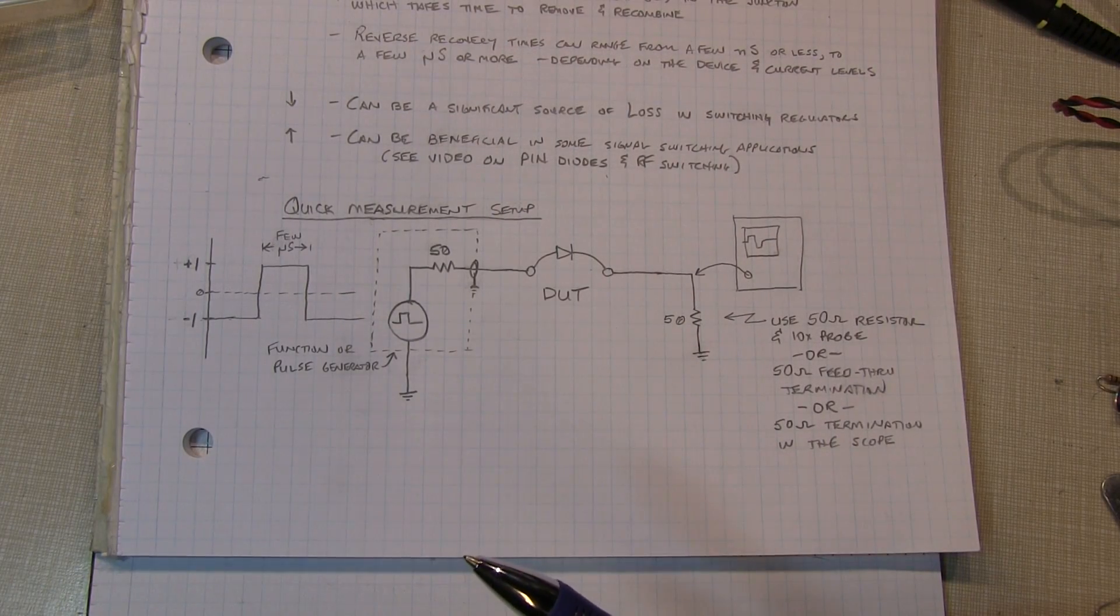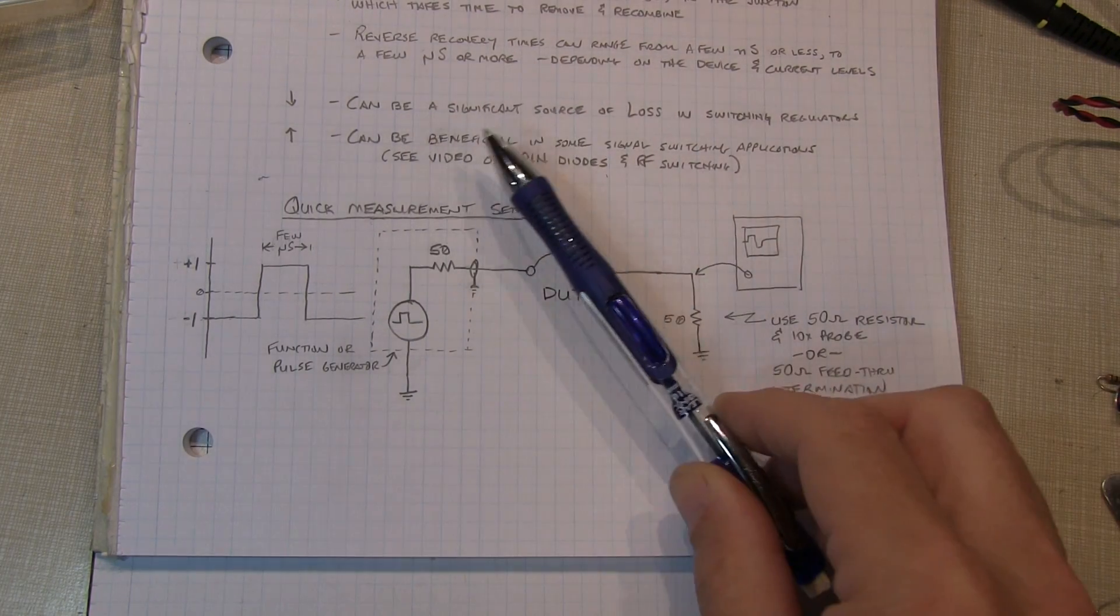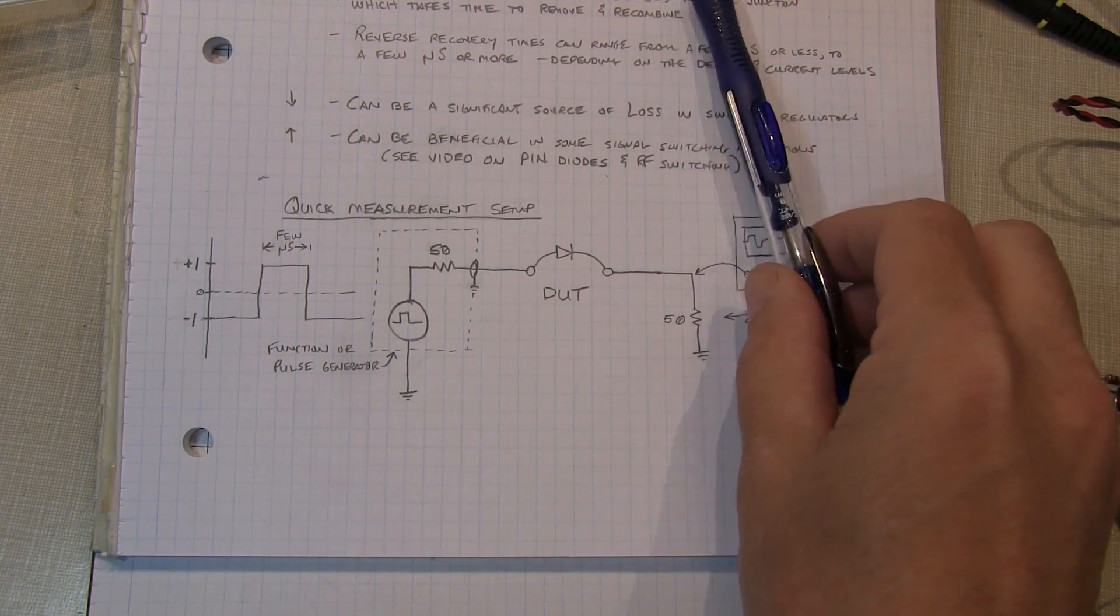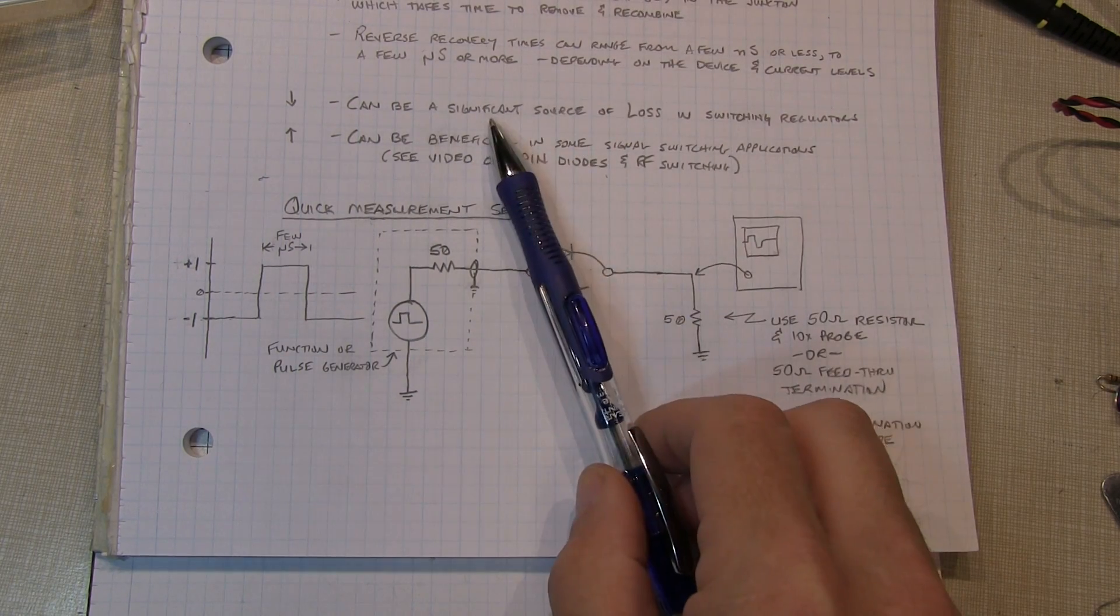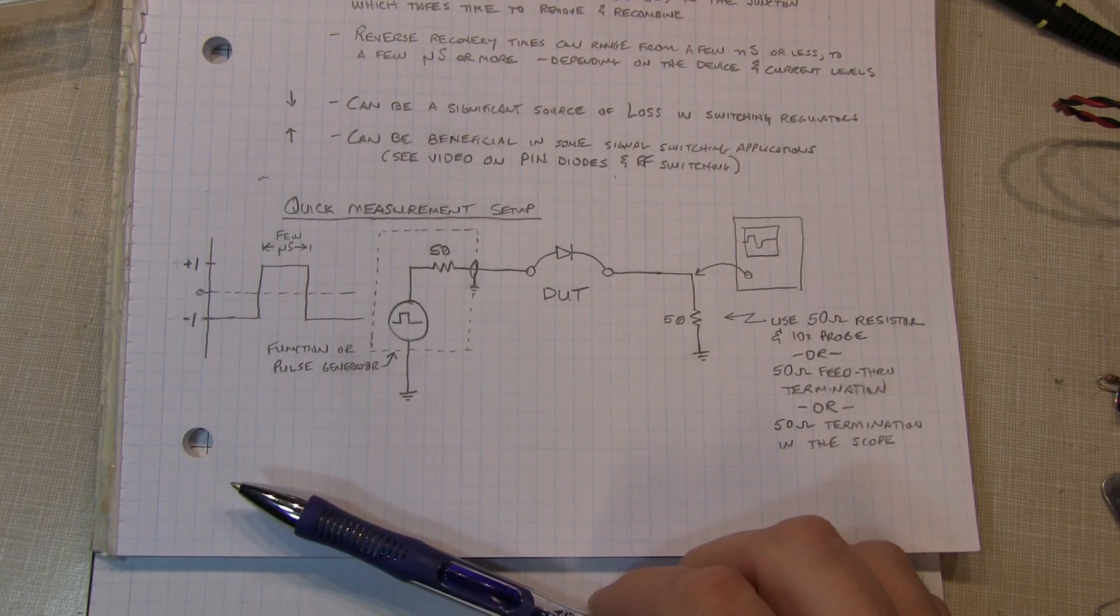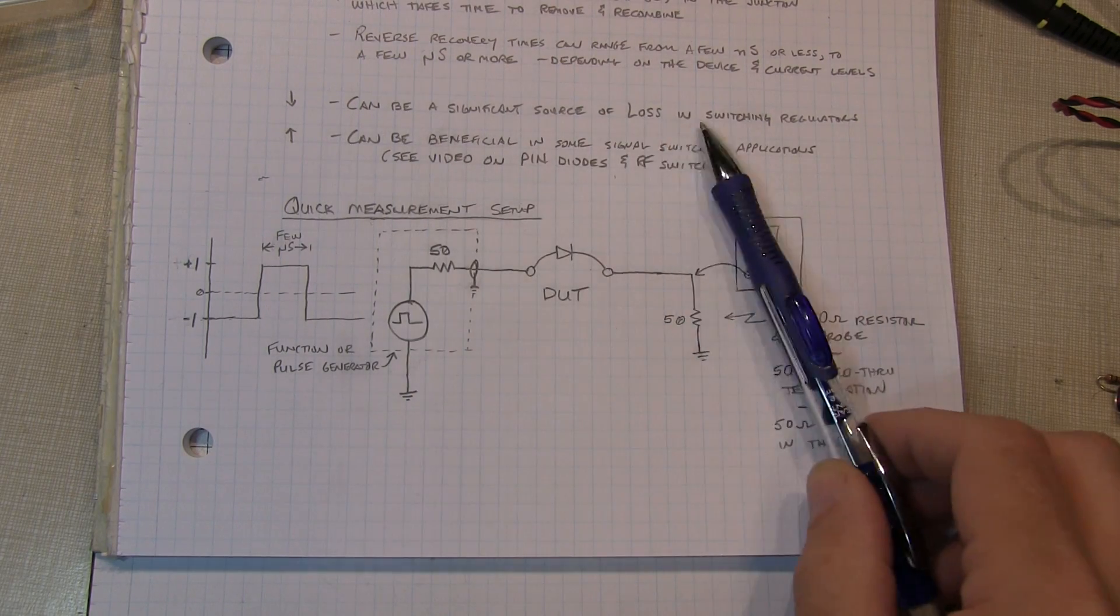So why do we care about reverse recovery? Well, if you had a diode that had a long reverse recovery time, that could be a significant source of loss in like a switching regulator where we want to snap the current off very quickly.